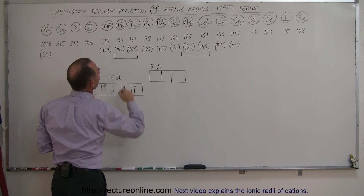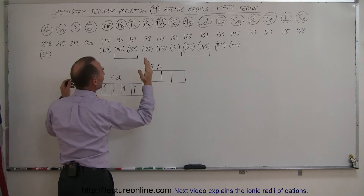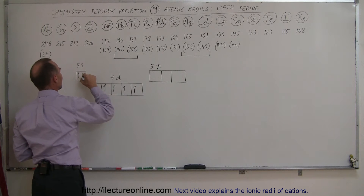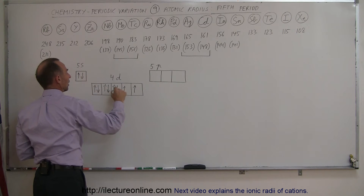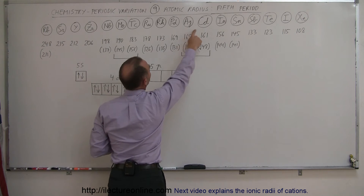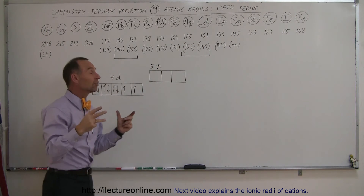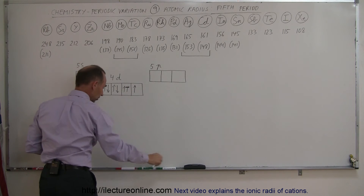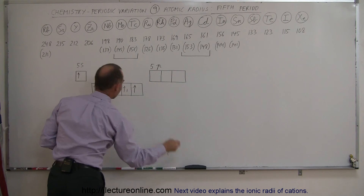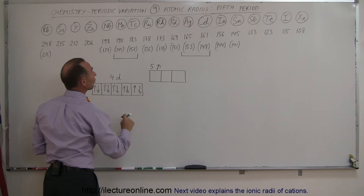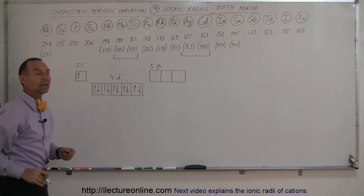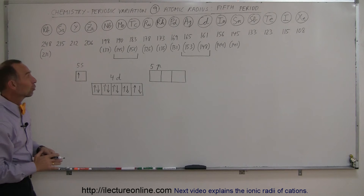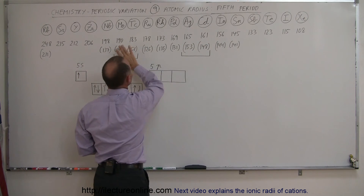Continuing on to ruthenium, rhodium, and palladium, you can see that the radii begin to decrease again in size. Then when we get to silver and cadmium, notice that the covalent radius begins to increase again, because an electron is pulled off and the 4d orbitals fill up, causing more of a screening effect. This pulls one of the electrons out of the 5s orbital — the electron must be spin-down — and notice that the covalent radius increases again.